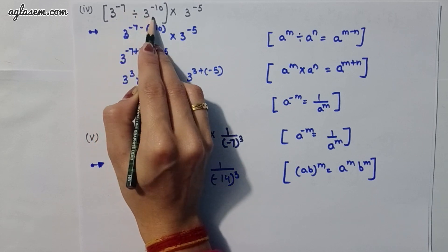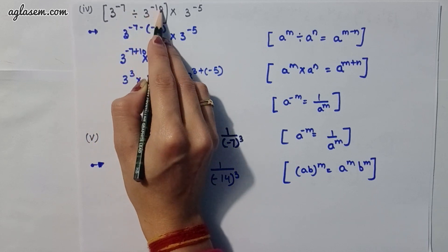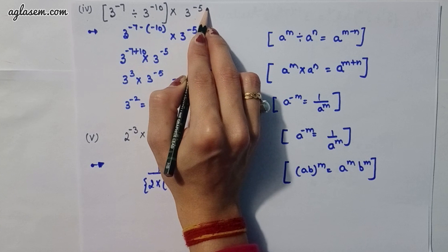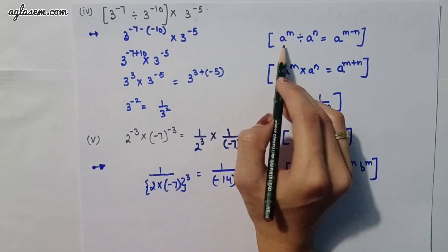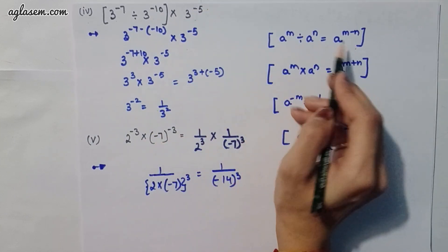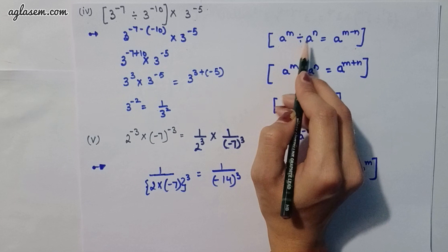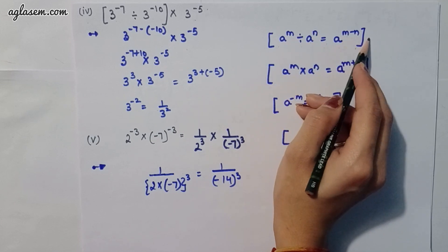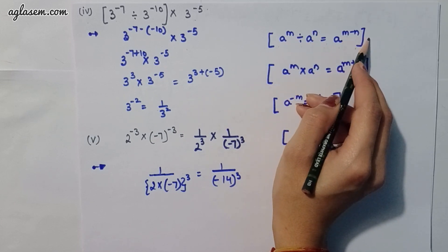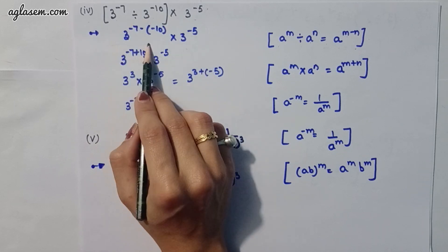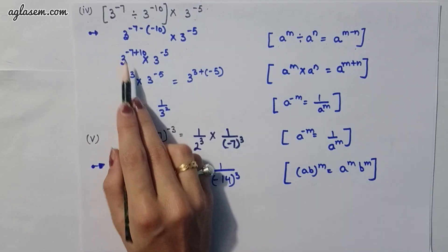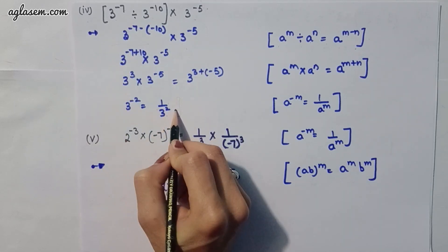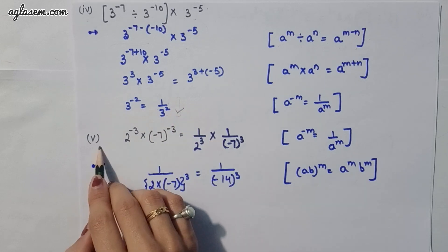Moving to the fourth part: 3^(-7) divided by 3^(-10), divided by 3^(-10) × 3^(-5). Applying the formula a^m / a^n = a^(m-n), we find the answer is 1 / 3^2.